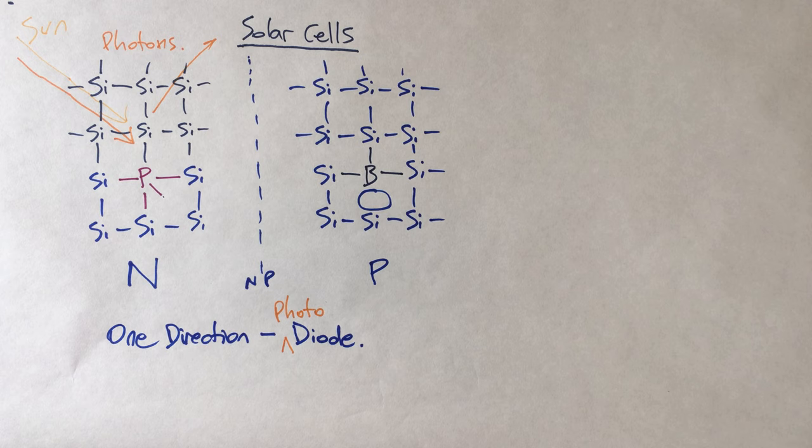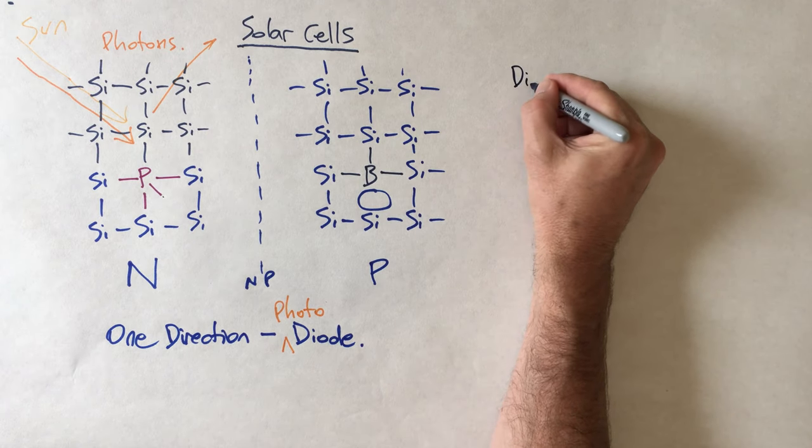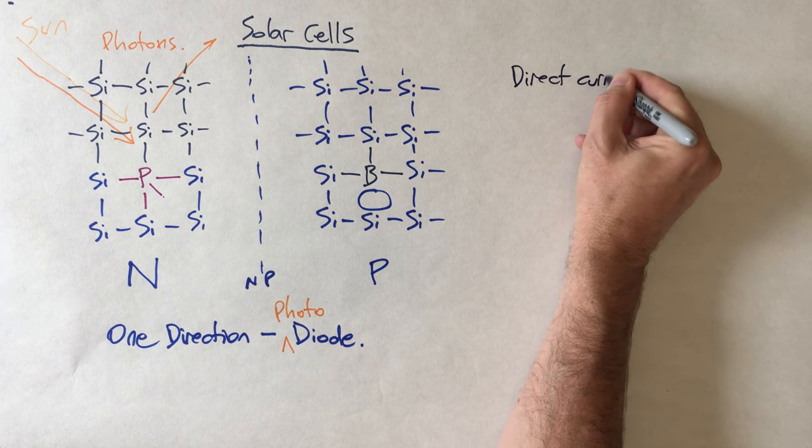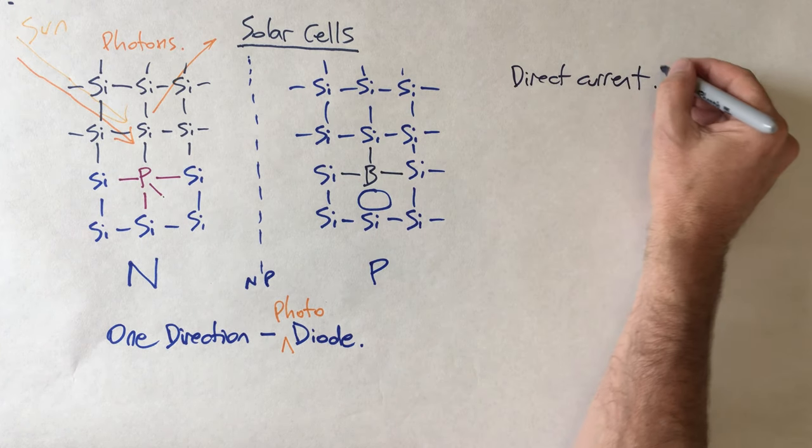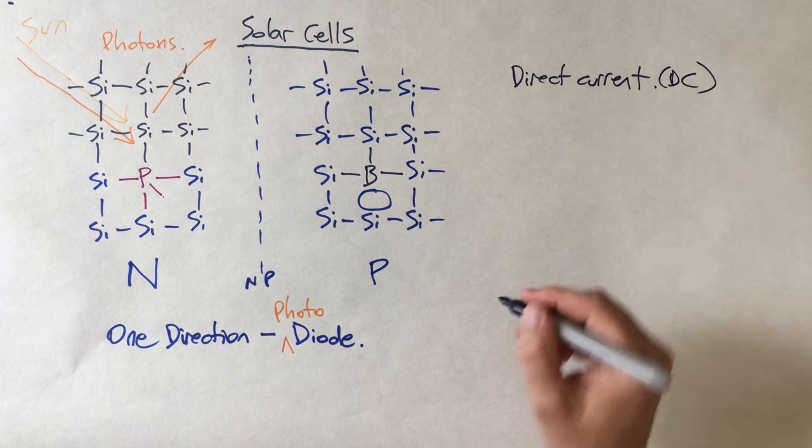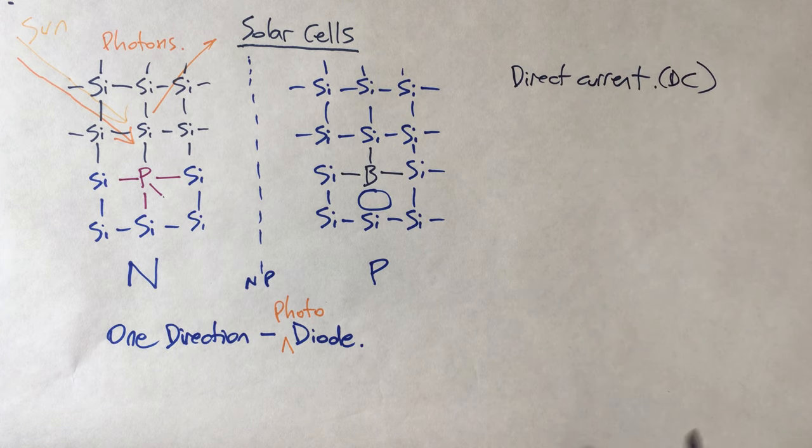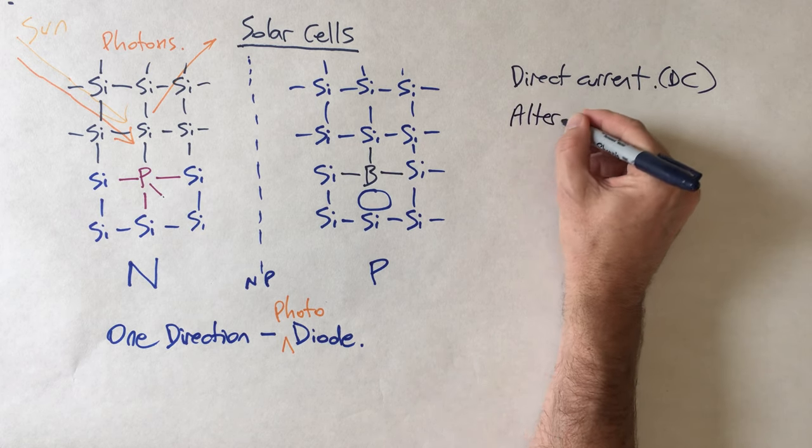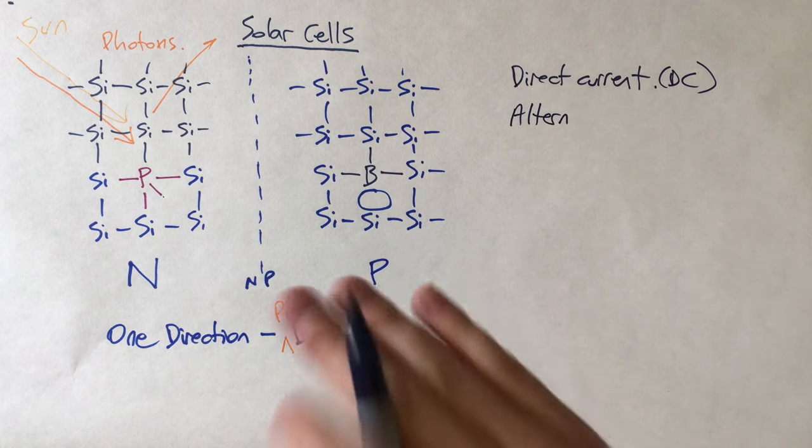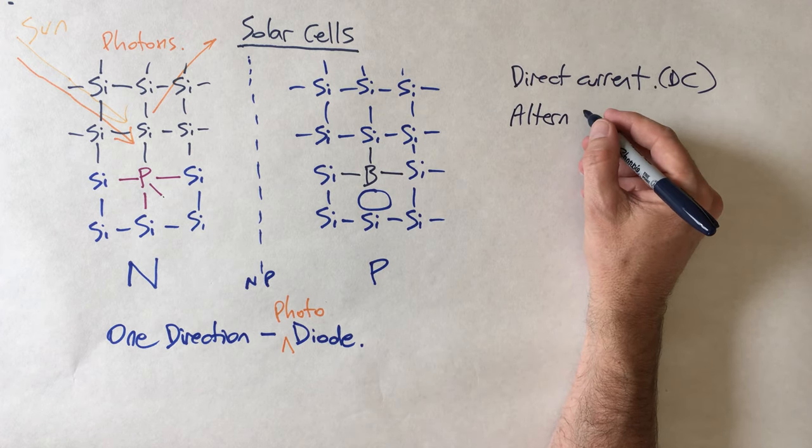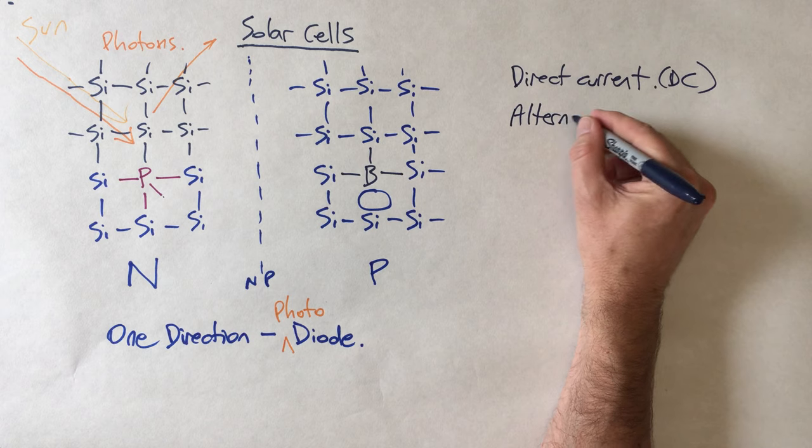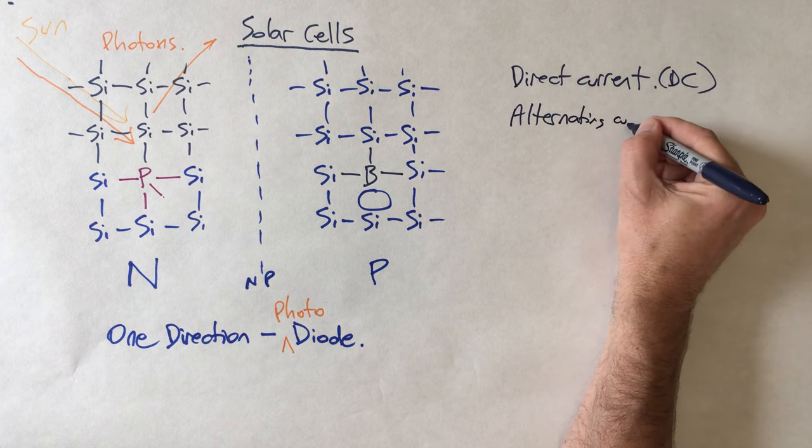If you want to use it in your home, the electricity that comes out of the power outlets in your home is known as alternating current, where the voltage actually goes up and down 50 times a second in Australia or 60 times a second in the United States. Alternating current, you probably heard that called AC. And so what we need is something known as an inverter. So an inverter is a piece of electronics which can actually take a DC source of electricity and convert it to AC. Once we've got an inverter, we can then start to feed this source of electricity that we've made into our home.